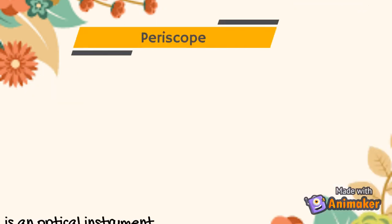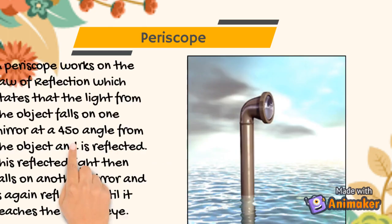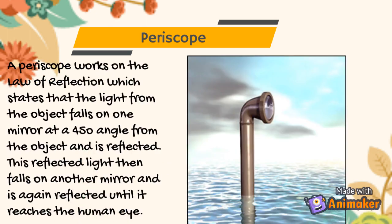Next, we have a periscope. It is an optical instrument that allows objects not in direct line of sight to be viewed. A simple periscope only requires mirrors, whereas a more complicated periscope utilizes prisms. A periscope works on the law of reflection — light from the object falls on one mirror at a 45-degree angle and is reflected. This reflected light then falls on another mirror and is again reflected until it reaches the human eye.